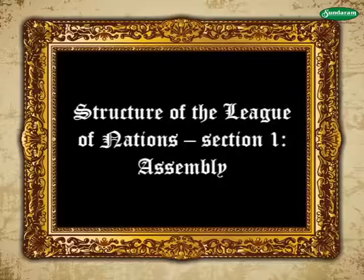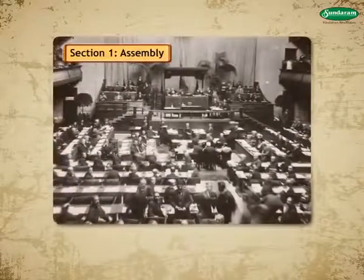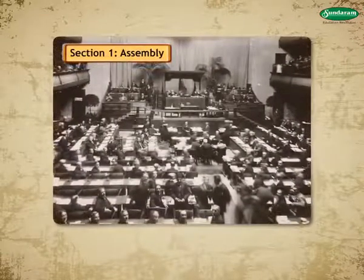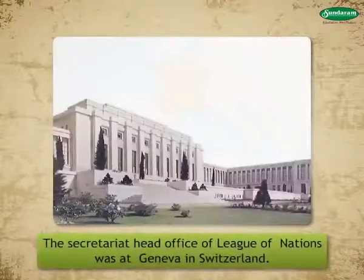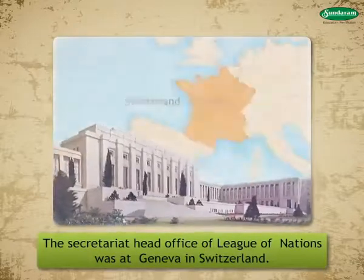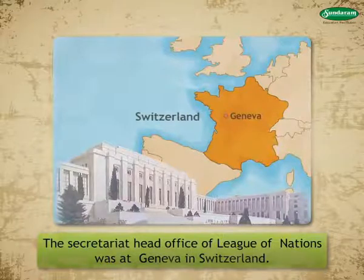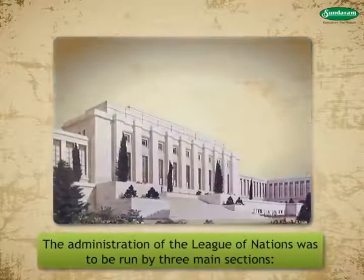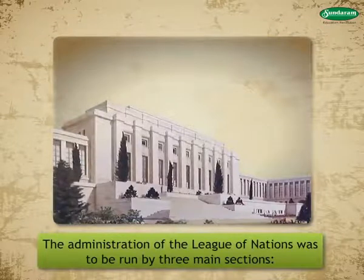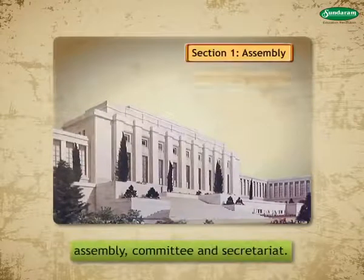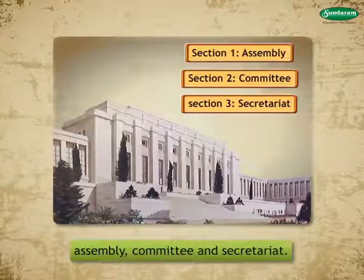The Secretariat Head Office of the League of Nations was at Geneva in Switzerland. The administration of the League of Nations was to be run by three main sections: Assembly, Committee, and Secretariat. Let's learn about each section in detail.